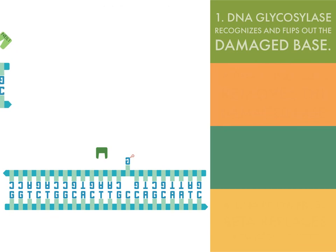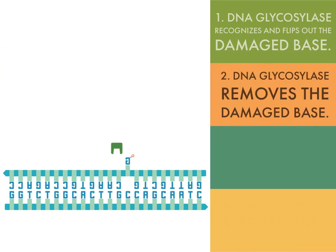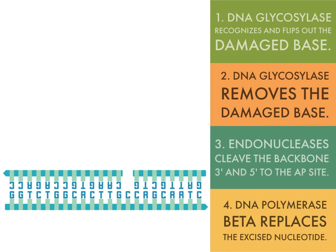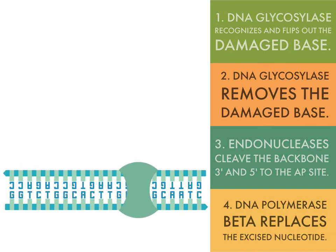After DNA glycosylase removes the flipped-out abnormal base, it leaves behind a site lacking its base called an AP site — AP signifying apurinic or apyrimidinic. Next, AP endonuclease cleaves the phosphodiester bond 5' to the AP site, while AP lyase cleaves the phosphodiester bond 3' to the AP site, allowing removal of that piece of DNA backbone. Polymerase beta then replaces the excised nucleotide, and finally DNA ligase closes the nicks.